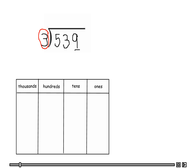We're going to look at the number nine in the ones place, so let's place nine discs here in groups of three: one, two, three, four, five, six, seven, eight, nine. As you can see, we have three groups of three — group one, two, and three.